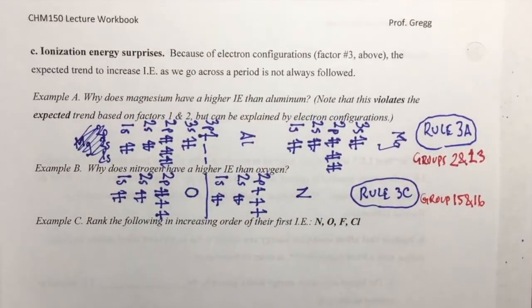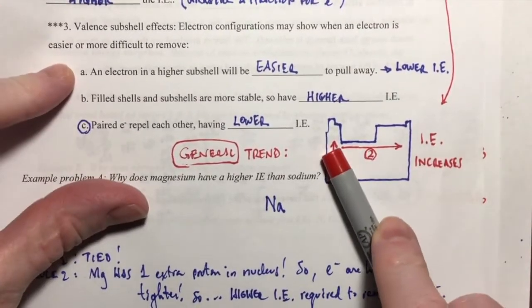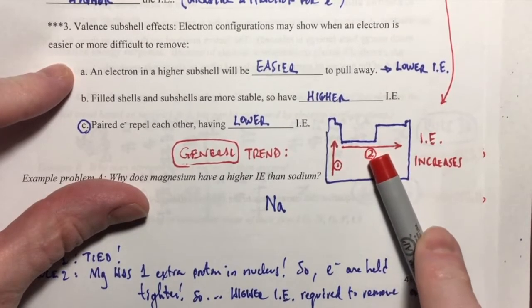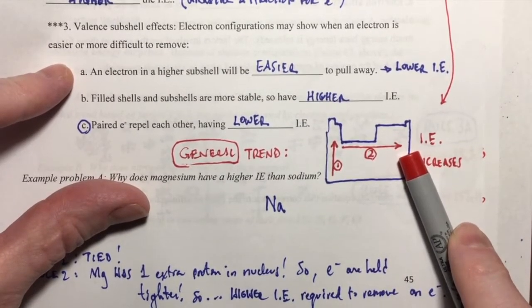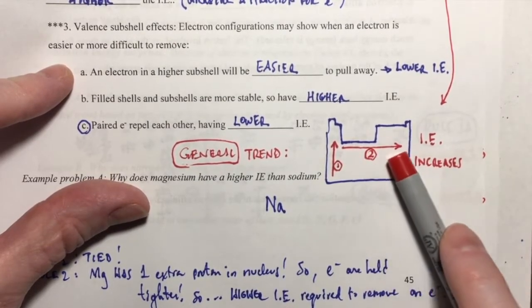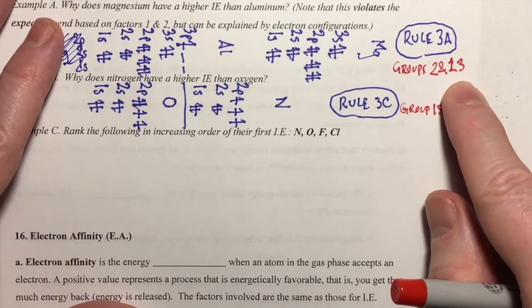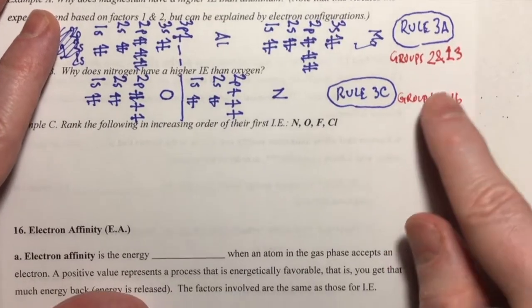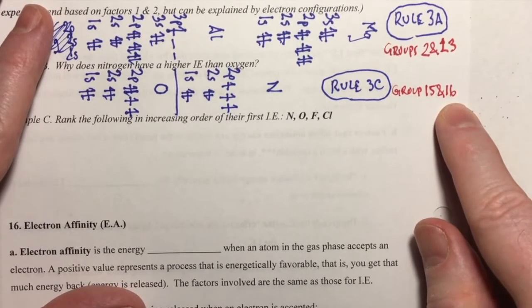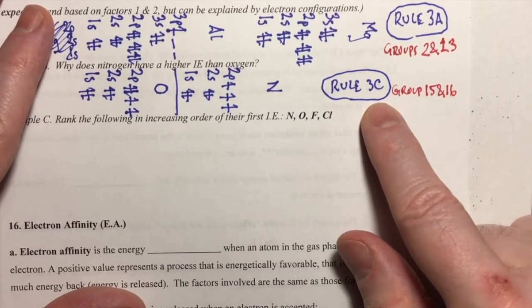To review: the general expected trend in ionization energy as we go across a row is that the ionization energy increases, because of the additional protons placed in the nucleus. However, there are two predictable exceptions that crop up as we go across rows. Anytime we compare a group 2 with a group 13 atom we will have an exception to that trend due to rule 3a, and anytime we compare a group 15 to a group 16 atom that will lead to an exception due to rule 3c.